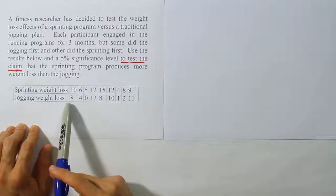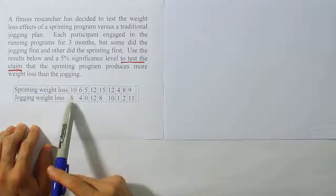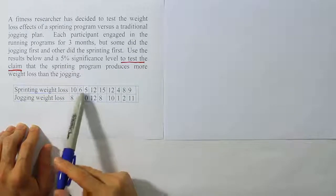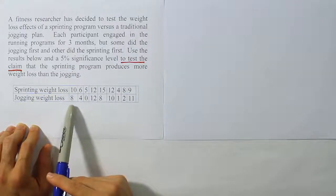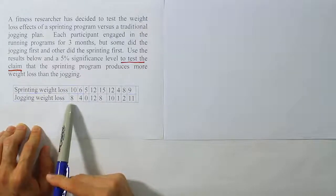These are the scores for each program. This is the weight loss achieved under the sprinting, this is the jogging weight loss that was achieved. They did them in different orders just to make sure there wasn't some kind of bias introduced by the first program having the greater effect or something or the second program having the greater effect.